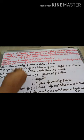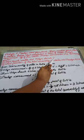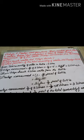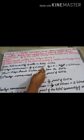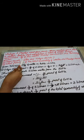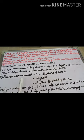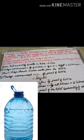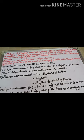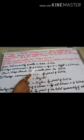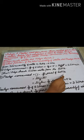But the question asks: what fraction of the total quantity of water did Pradeep drink? So you need the answer as a fraction. Here, the total is represented as 1, because 1 means the complete water bottle — a complete water bottle equals 1.